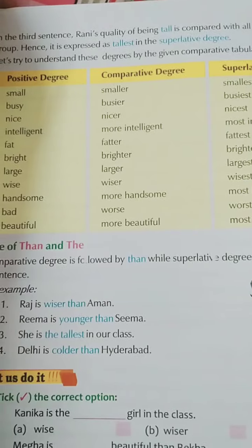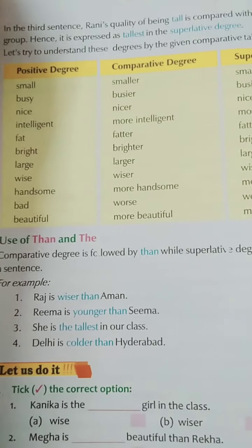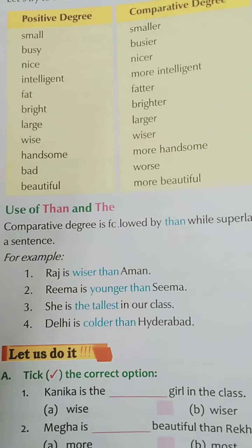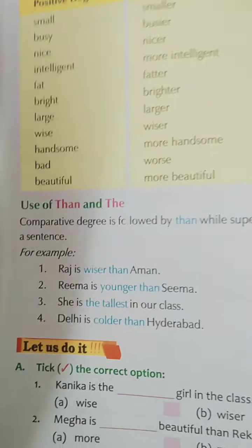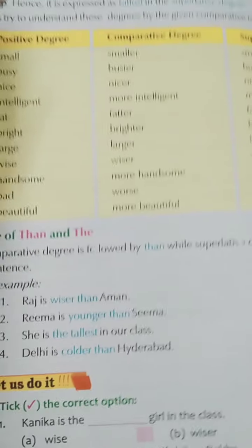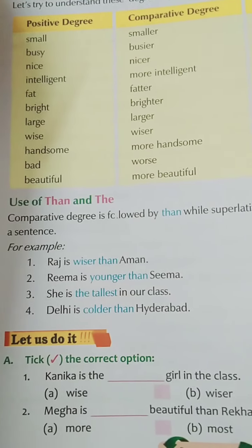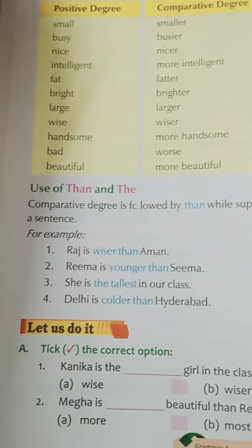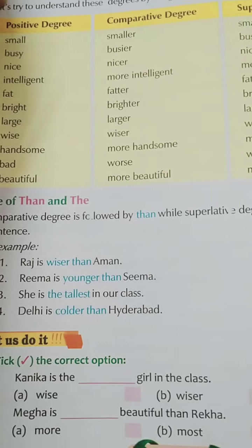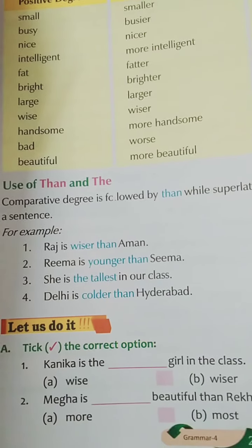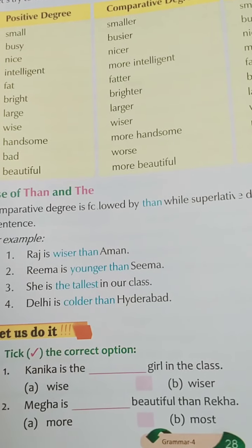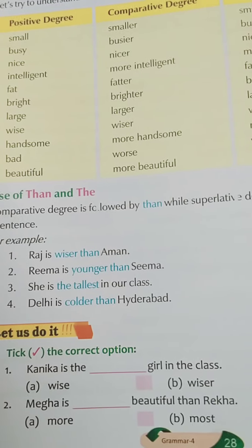Some examples are: small, smaller, smallest; busy, busier, busiest; nice, nicer, nicest. Go through these examples — they are very helpful for further chapters and in your further life. Now see the use of 'than' and 'the': the comparative degree is followed by 'then' while the superlative degree is preceded by 'the'. For example: Raj is wiser than Aman; Rima is younger than Aman.